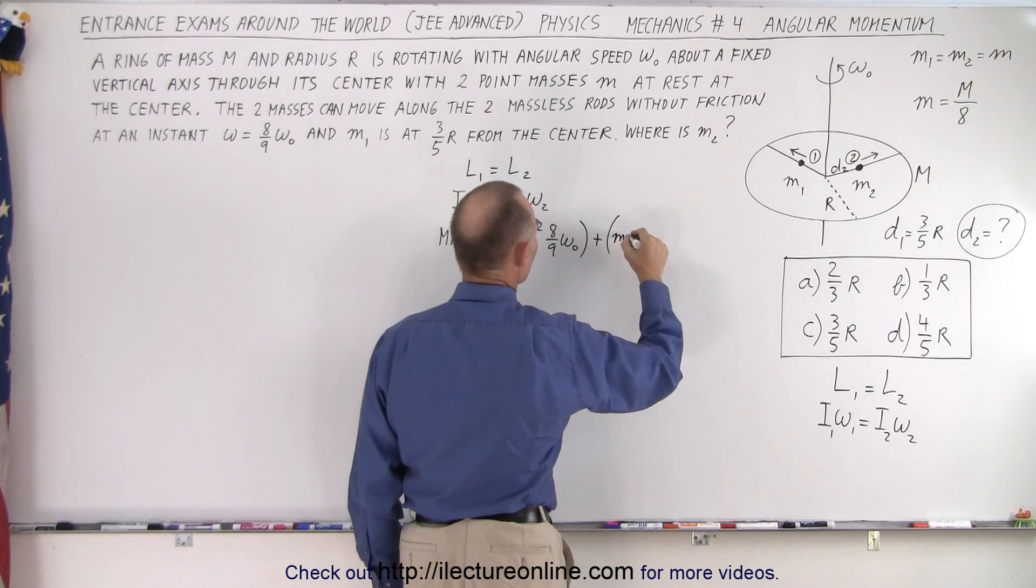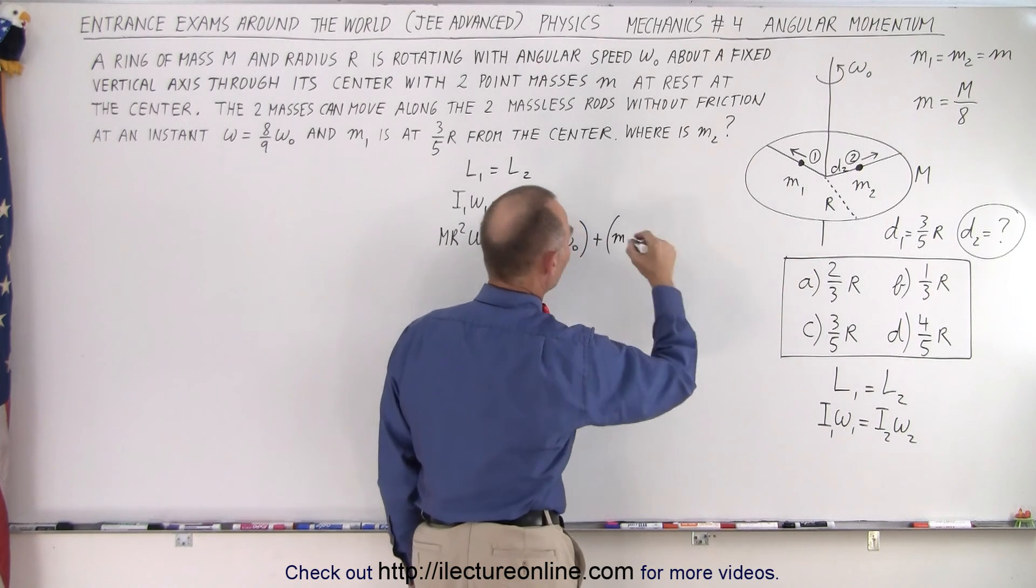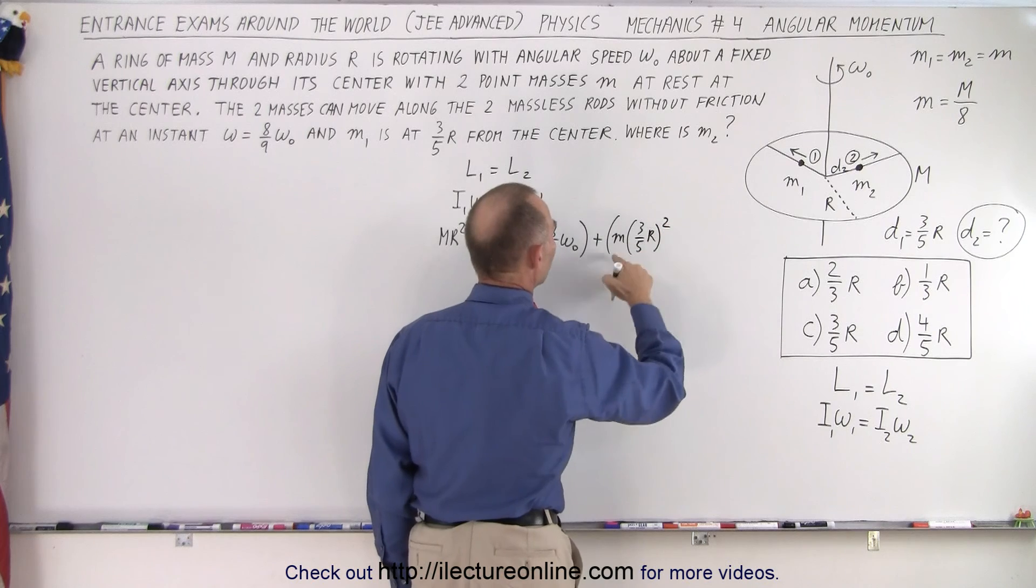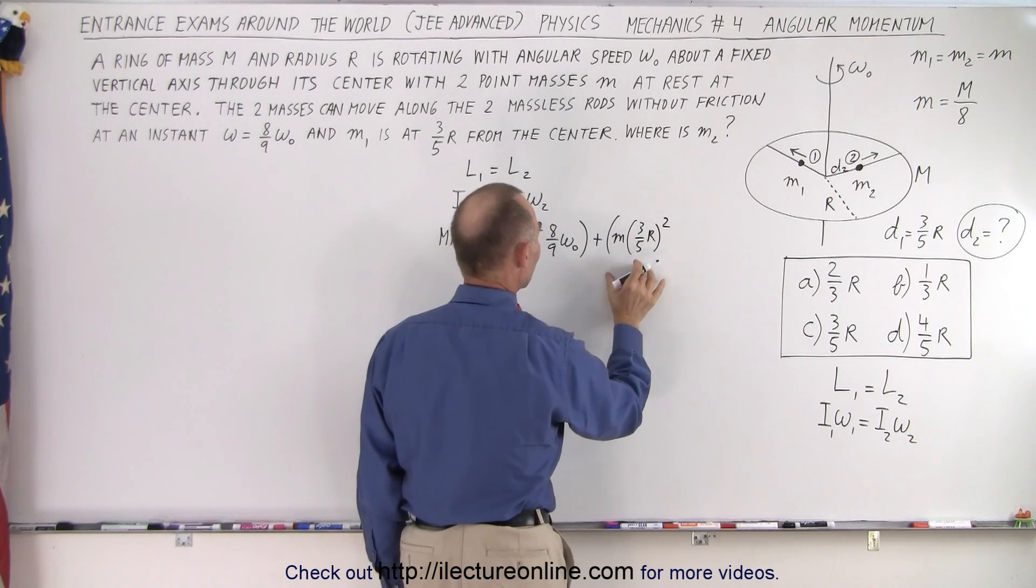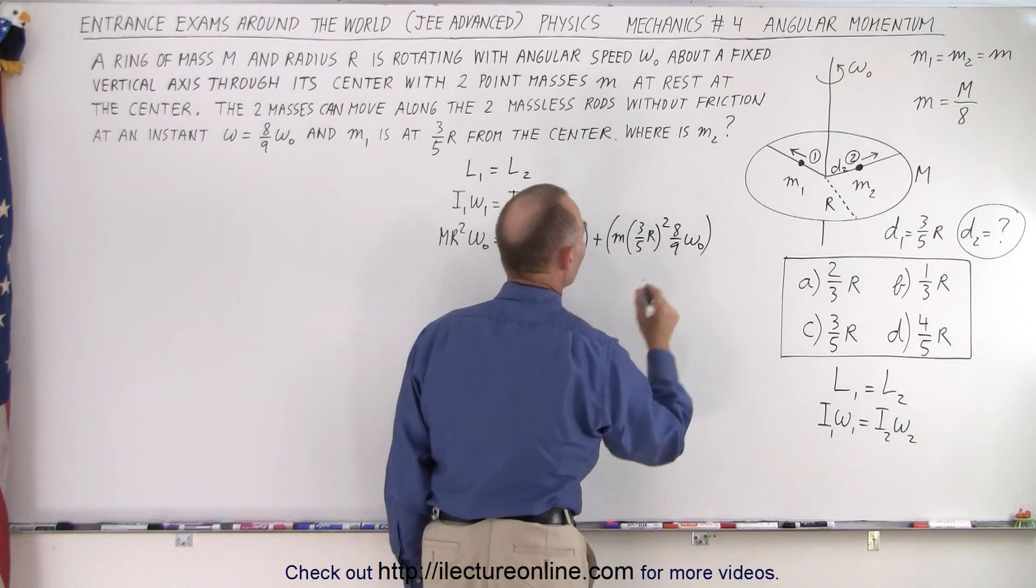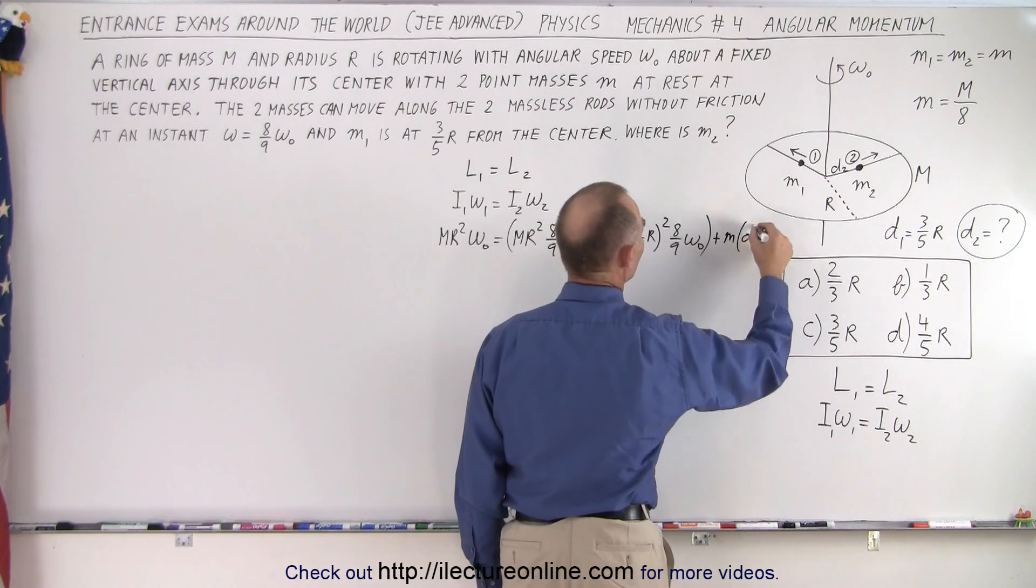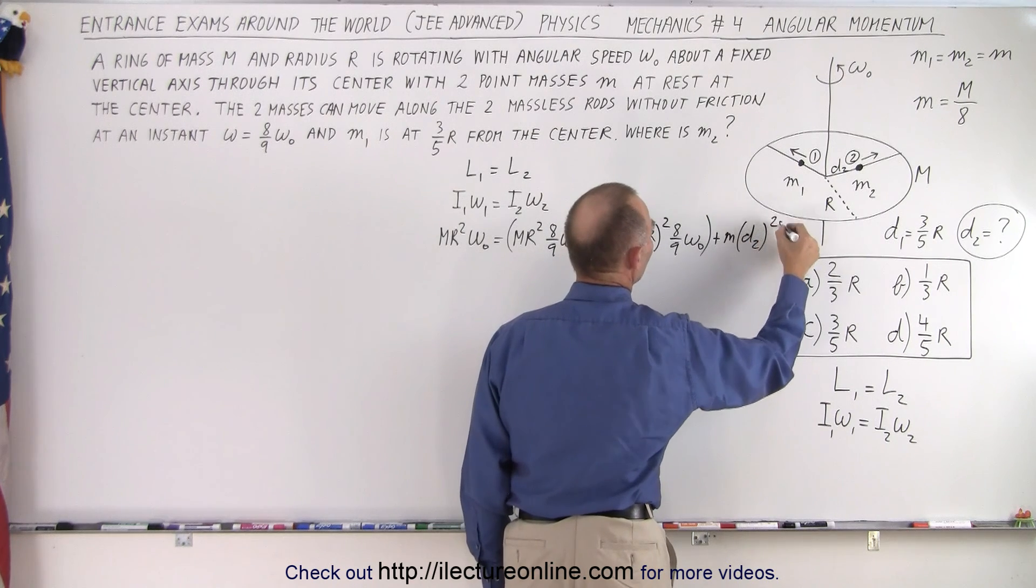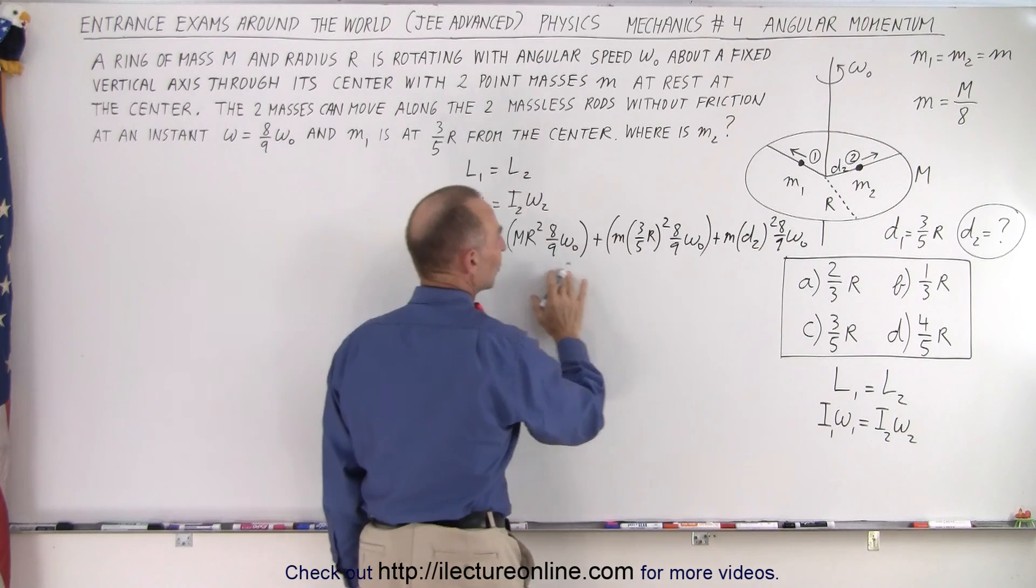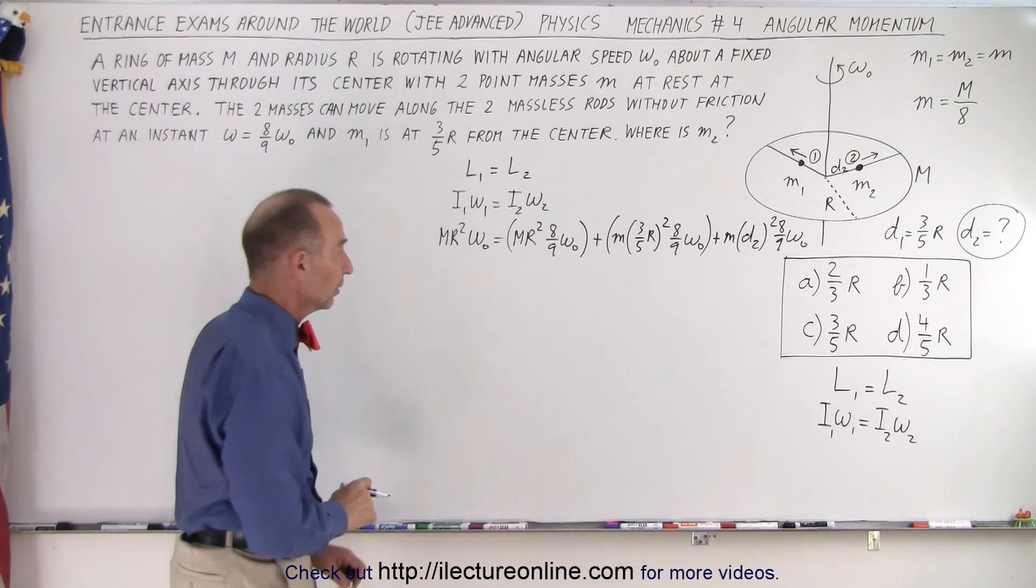Plus, would be m, and now the distance would be three-fifths r, so it would be three-fifths r squared, because all the mass is at that location, times eight-ninths omega sub-naught. And then, the second one would be plus m times d2 squared times eight-ninths omega sub-naught. This is the angular momentum at the end, this is the angular momentum in the beginning, and they should be equal to each other.